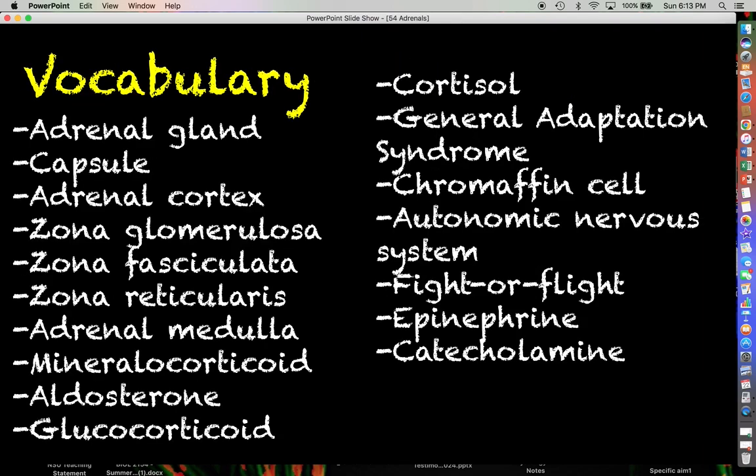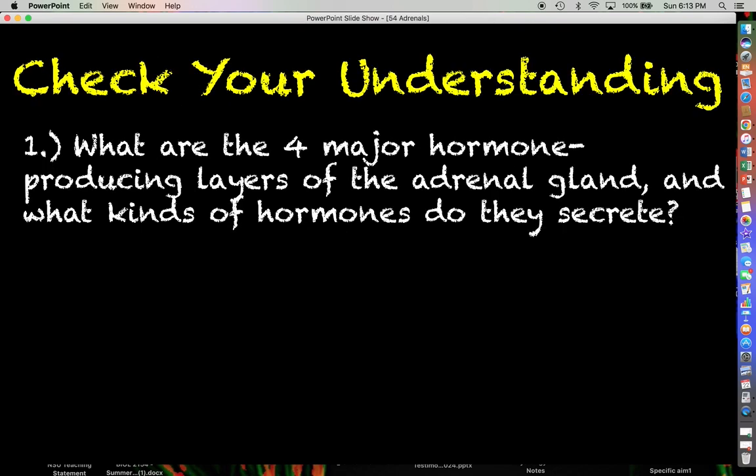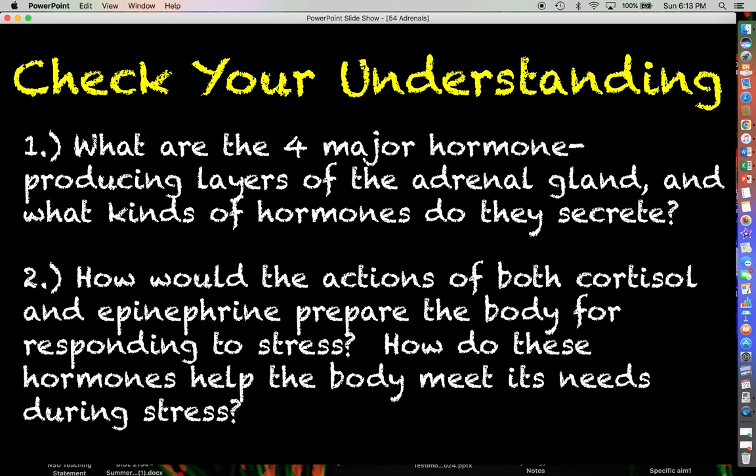That's pretty much going to wrap up this lecture on the adrenal glands. Here is a big list of vocabulary terms, most of which we have covered. If you see anything on the list that looks unfamiliar, look into your textbook to catch up. For checking your understanding: number one, what are the four major hormone-producing layers of the adrenal gland and what kinds of hormones do they secrete?